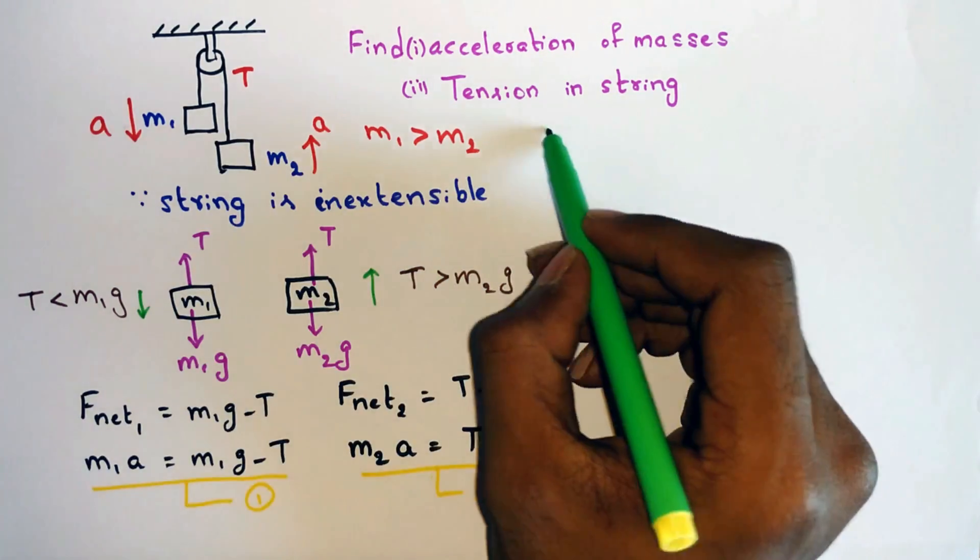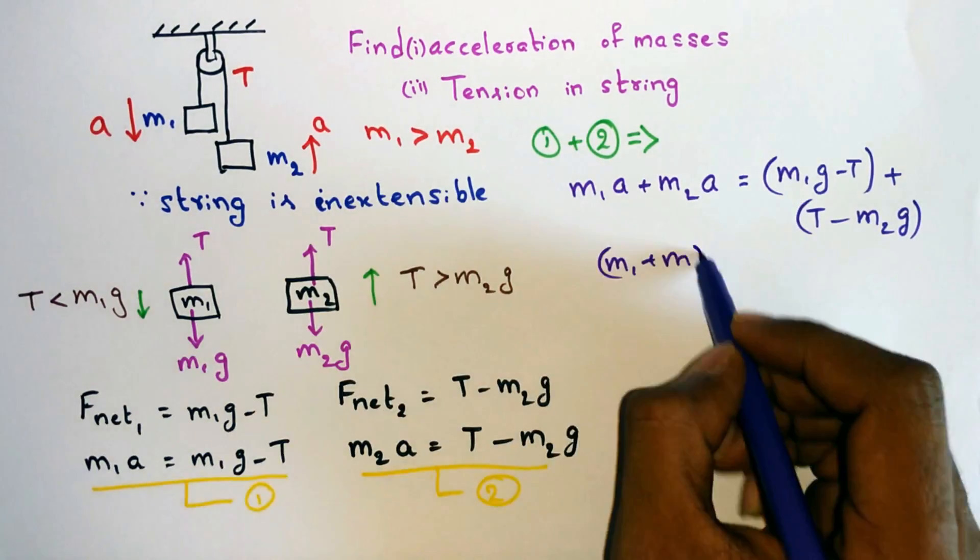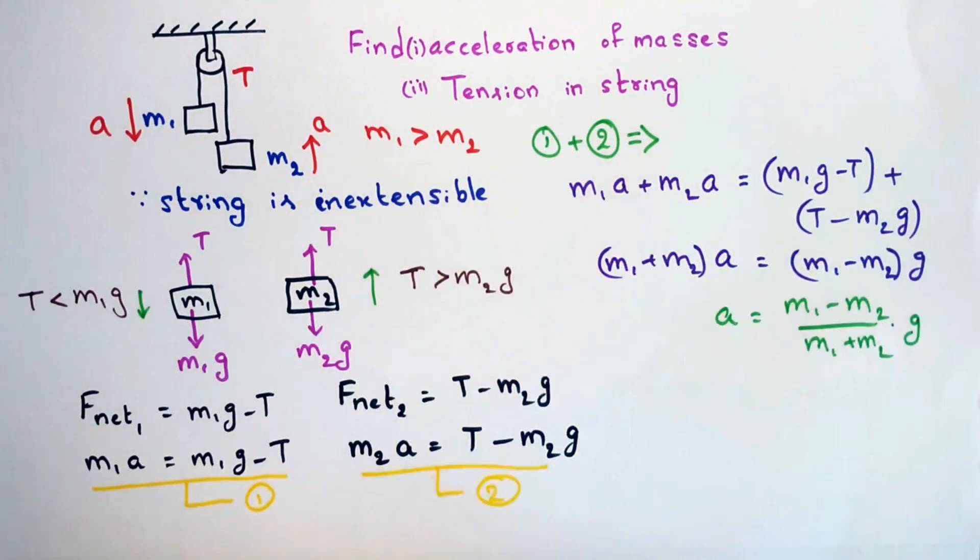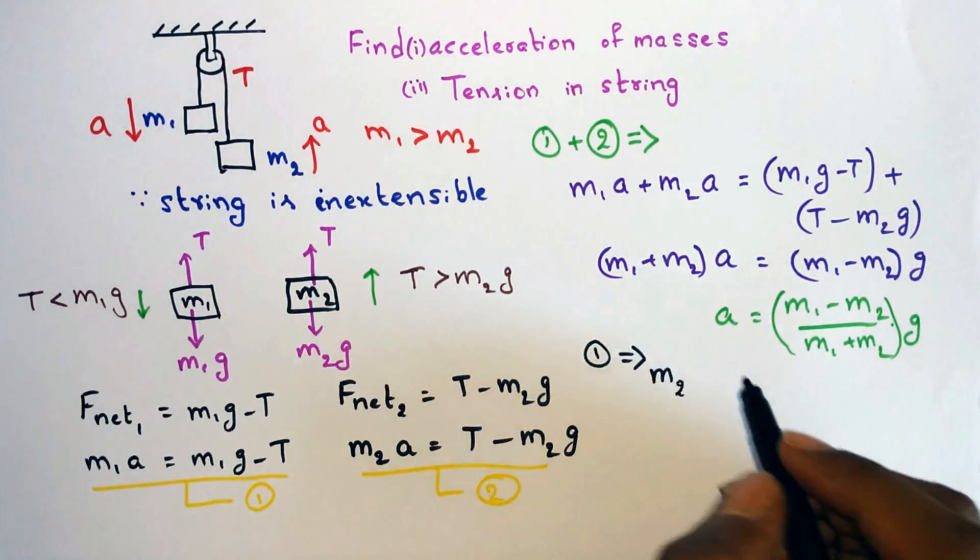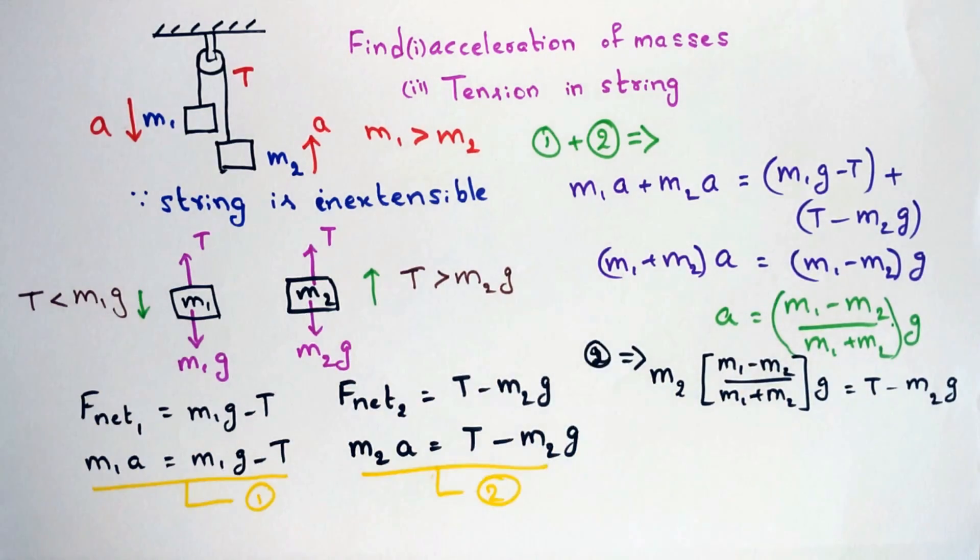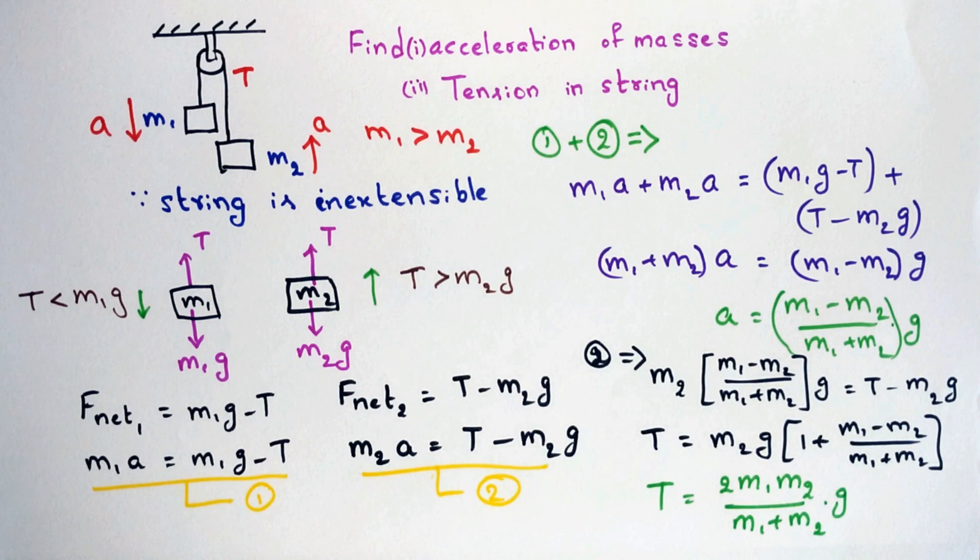So let's add both equations 1 and 2. We will get acceleration as m1 minus m2 by m1 plus m2 into g. Now substitute this a value in any of these two equations. Then we will get tension as T equals 2 m1 m2 g by m1 plus m2. Thus we have got both acceleration as well as the tension.